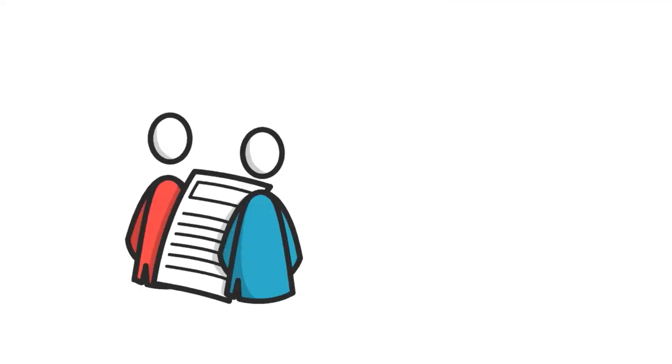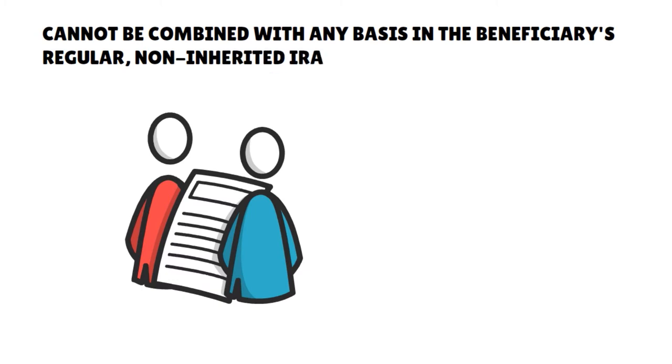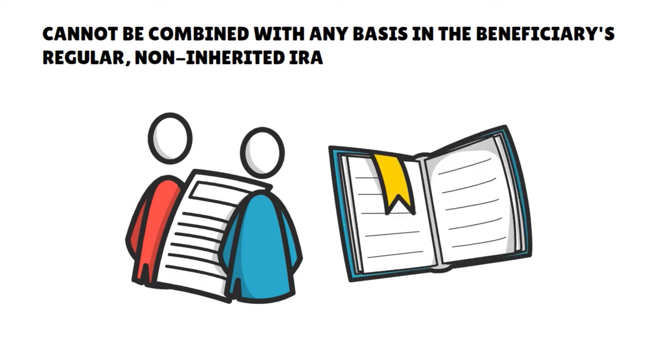What about inherited IRAs? Individuals who inherit IRAs that include after-tax amounts, also known as basis, must also file Form 8606 to claim the non-taxable portion of the distribution. It's critical to note that the basis amount in an inherited IRA cannot be combined with any basis in the beneficiary's regular non-inherited IRA — that is, an IRA the beneficiary established with their own contributions. This rule is one of the exceptions to the rule that requires all traditional IRA balances to be aggregated when calculating the prorated after-tax portion.